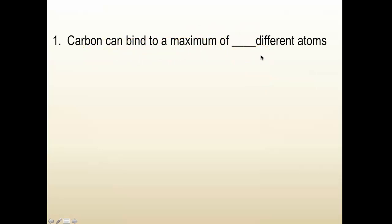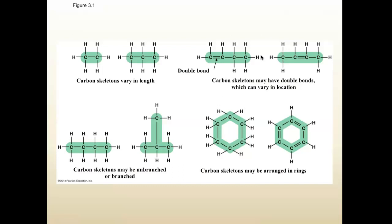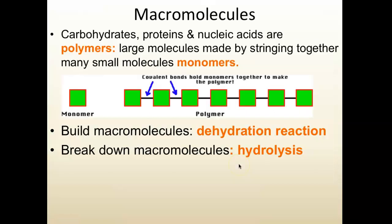Organic molecules contain carbon and hydrogen; inorganic molecules generally do not. Carbon can bind to a maximum of four different atoms. Organic molecules are highly diverse because carbon chains can vary in length, and bonds can be in different positions — two molecules with the same number of carbons and hydrogens but a double bond in different places will have different shapes and be different molecules. Chains can also branch or form rings.